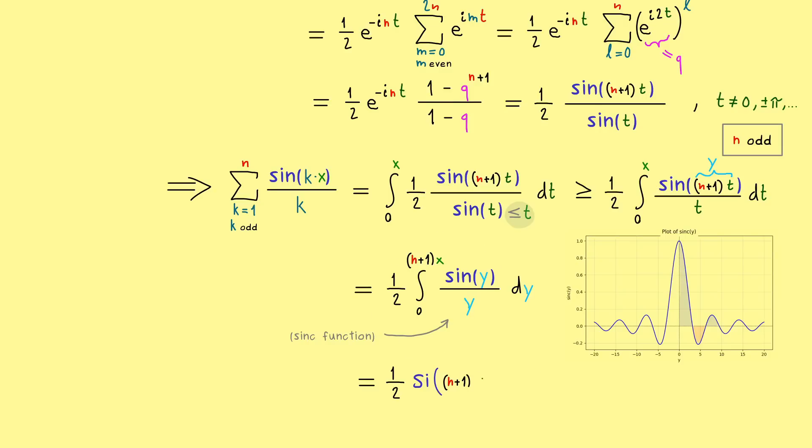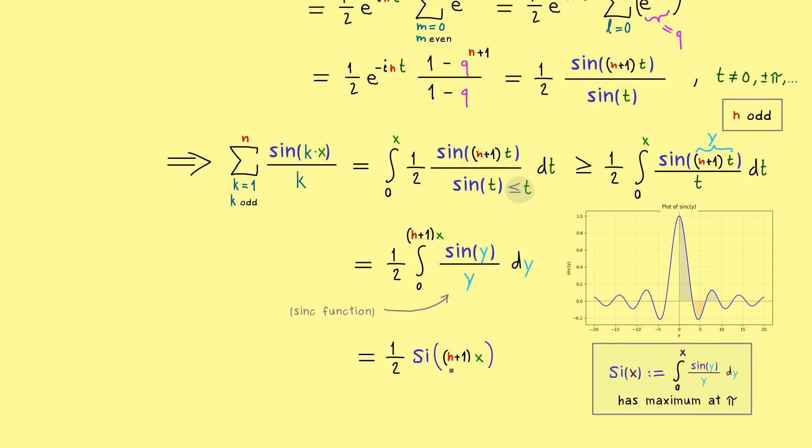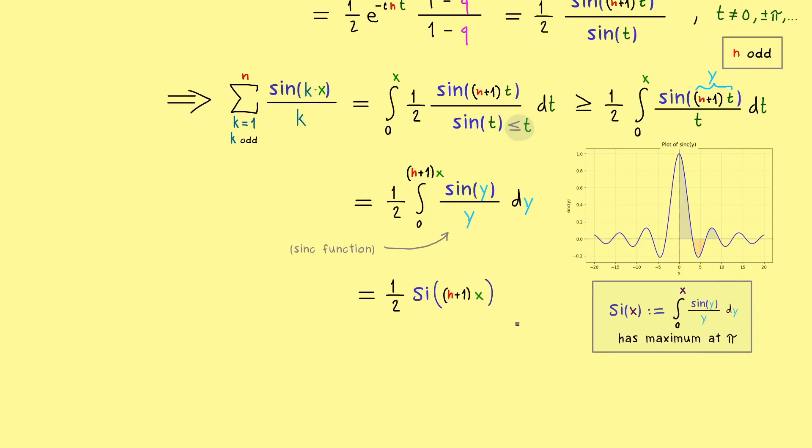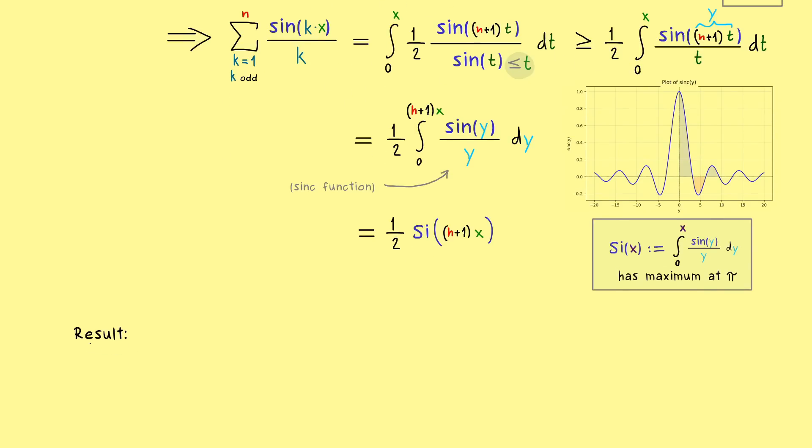And now we evaluate that at the point n plus 1 times x. So as already mentioned, the important fact we need here is that this sine integral function has a maximum at the position pi. And this immediately implies that the function we are actually interested in has a maximum at pi divided by n plus 1. Hence, exactly at this point we have the strongest estimate for our sum. And since this sum is used in our Fourier approximation, we have the estimate as wanted. More precisely, we look at our Fourier series f_n of f at the point pi divided by n plus 1. So you already see, the larger this n is, the closer we are at the origin.